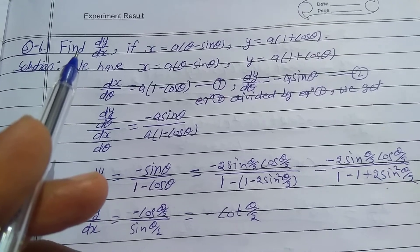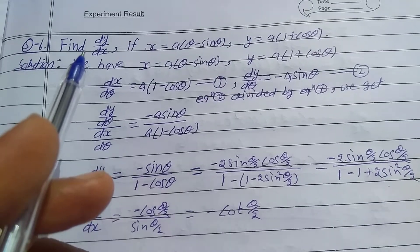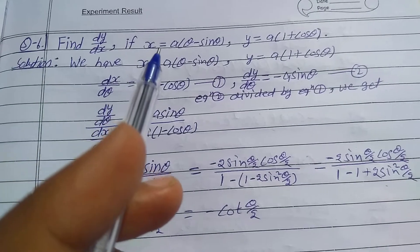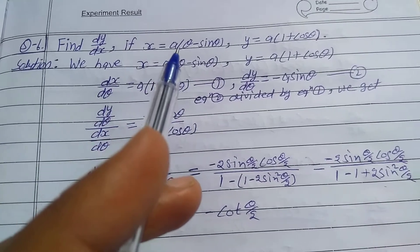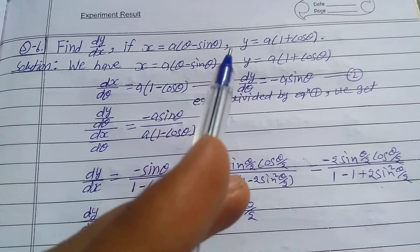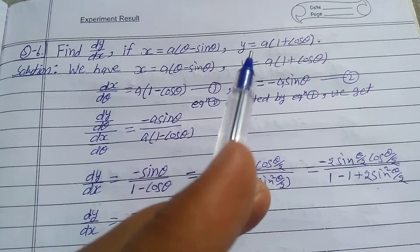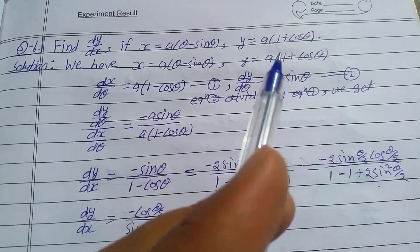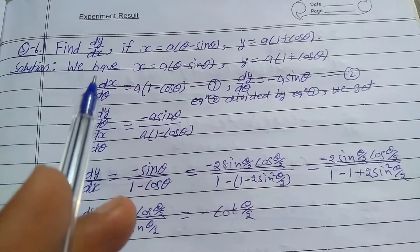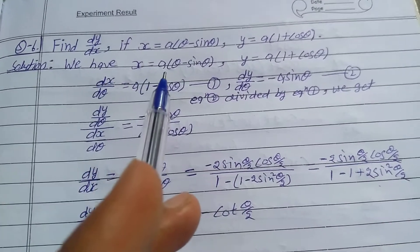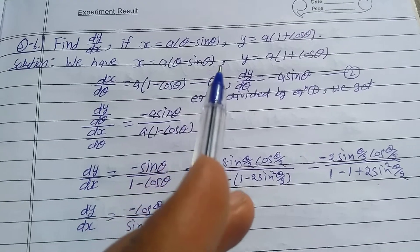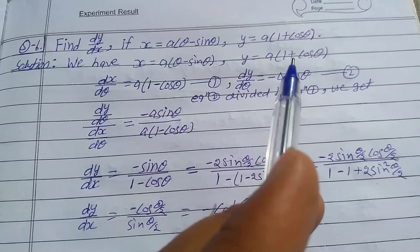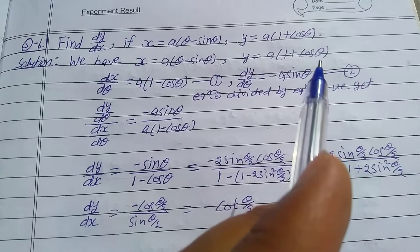Explanation number 6, Exercise 5.6, Class 12th. Find dy/dx if x = a(θ - sinθ), y = a(1 + cosθ). Solution start: we have x = a(θ - sinθ), y = a(1 + cosθ).